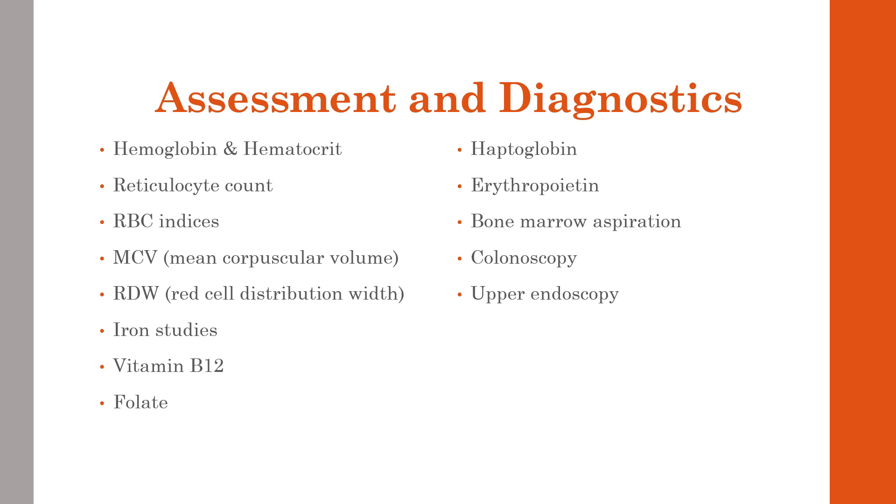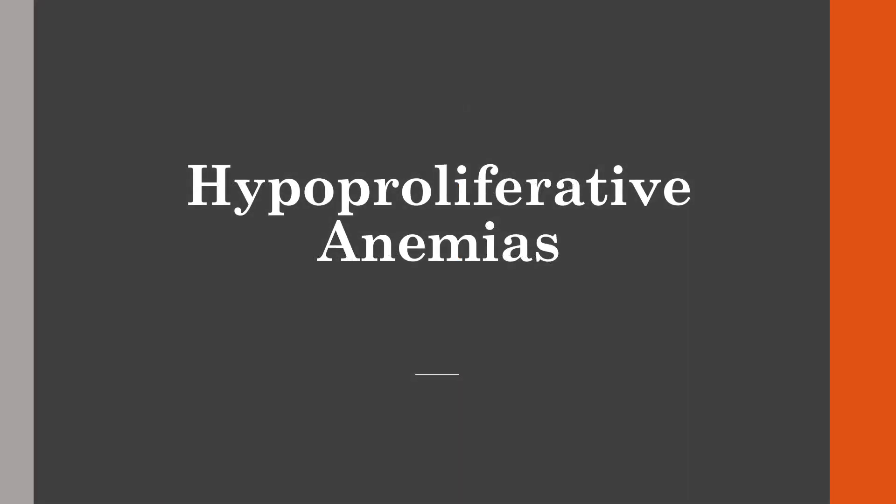Hypoproliferative anemias occur when the bone marrow produces inadequate amounts of erythrocytes. That decrease in erythrocyte production results in a low or inappropriately normal reticulocyte count. Causes can include bone marrow damage from chemicals like chemotherapy, lack of erythropoietin, or lack of nutrients like iron, vitamin B12, and folic acid. Hypoproliferative anemias include iron deficiency anemia, anemia in renal disease, anemia of inflammation, aplastic anemia, and megaloblastic anemia.